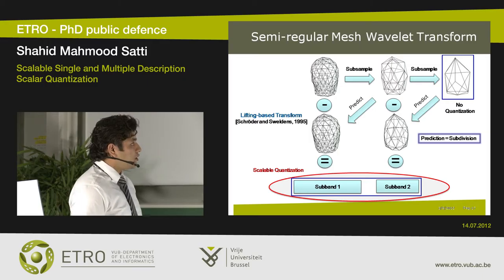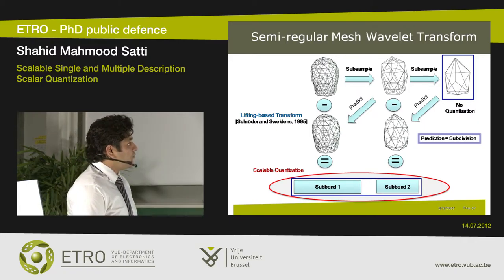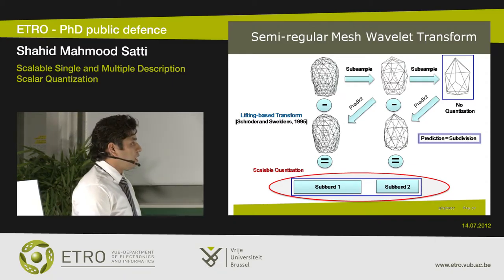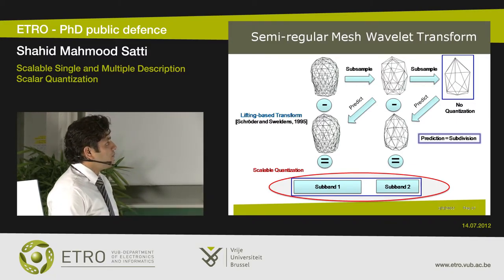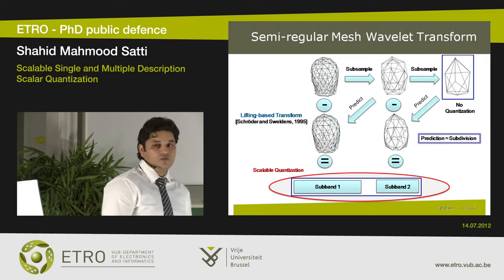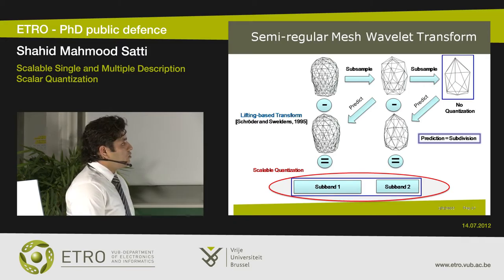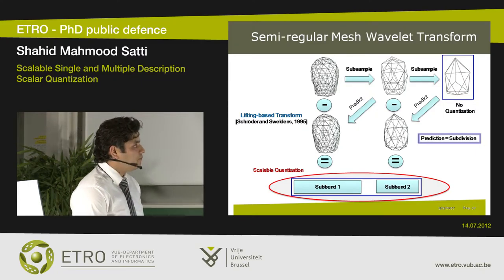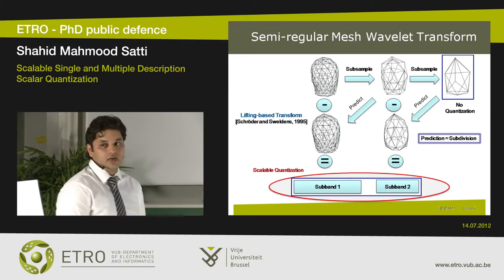How the wavelet transform works: we take the original semi-regular mesh and go to a coarse mesh using subsampling. For vertices present in the fine mesh but not in the coarse mesh, we create a prediction using some kind of subdivision. For these vertices, we record the prediction error as a vector called the subband, or high-frequency subband. We repeat this process on the lower resolution mesh to create another resolution subband, continuing until we end up with several subbands and a coarse mesh known as the base mesh.